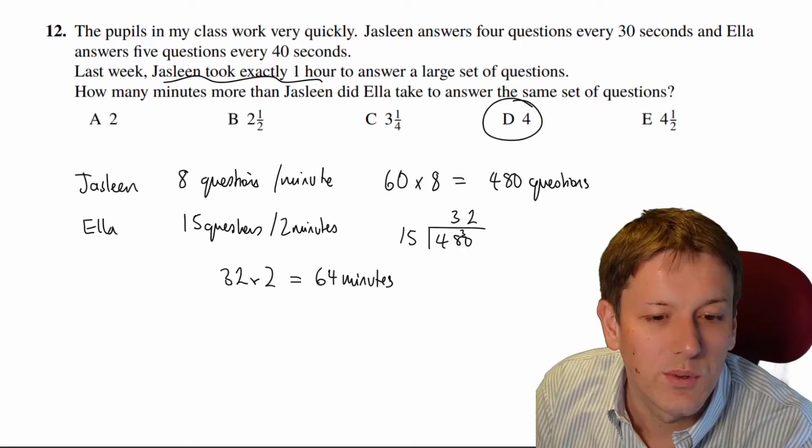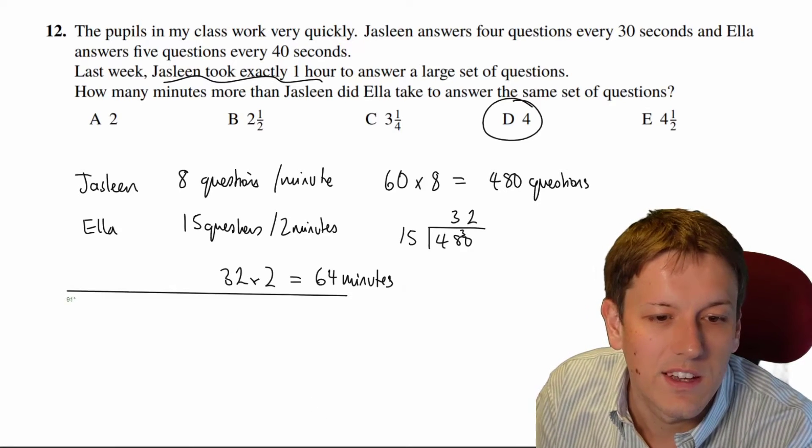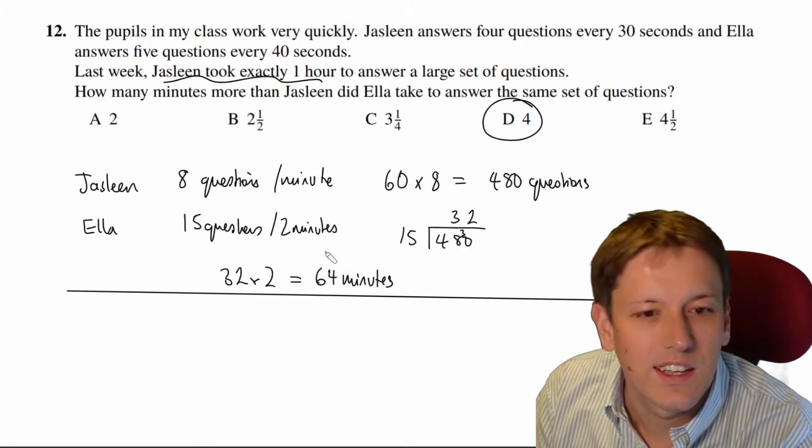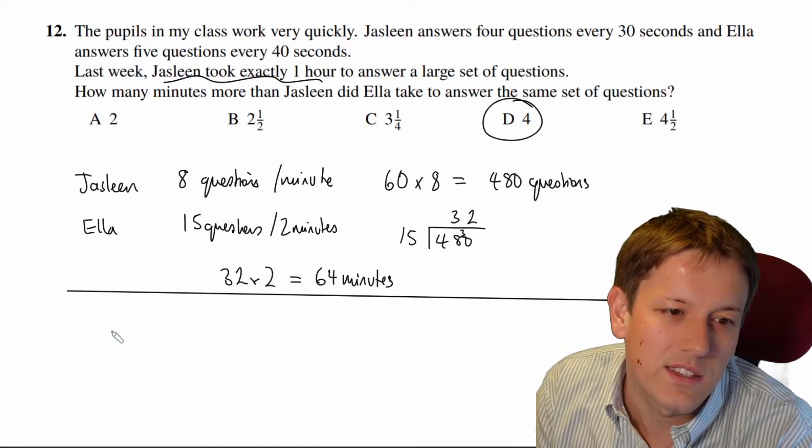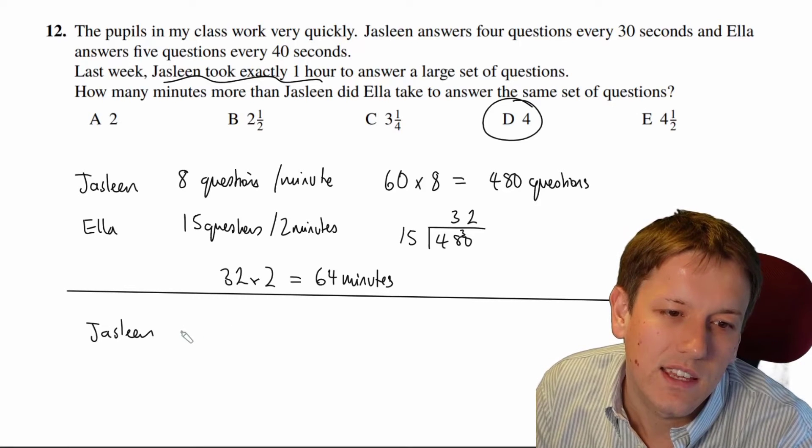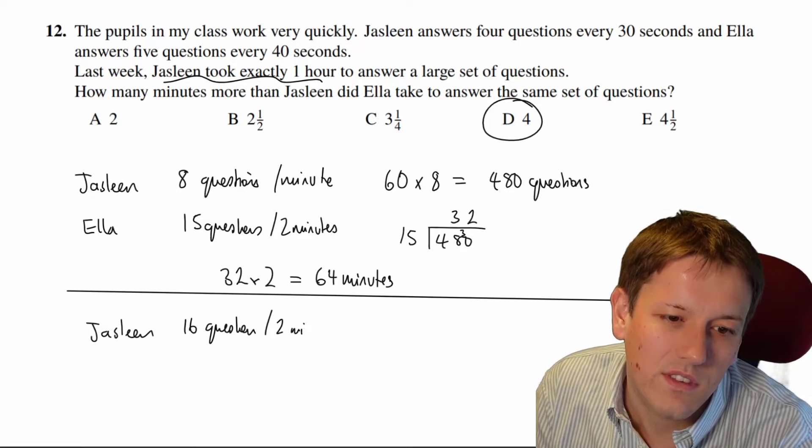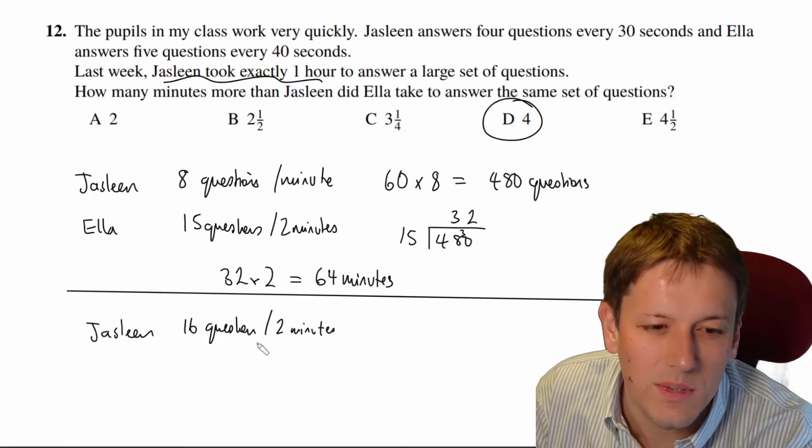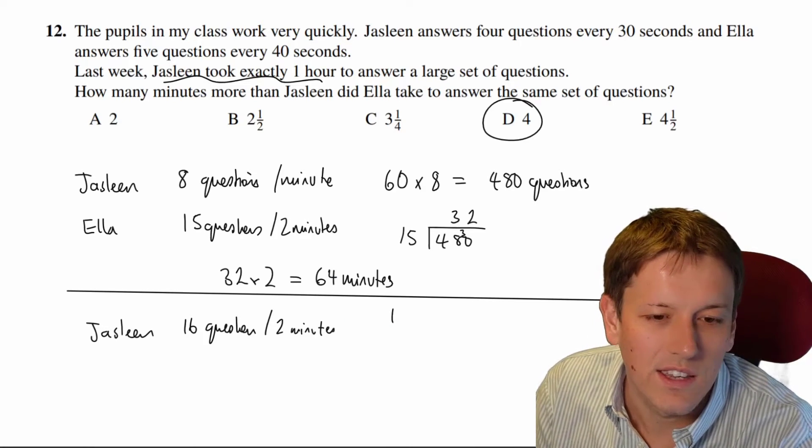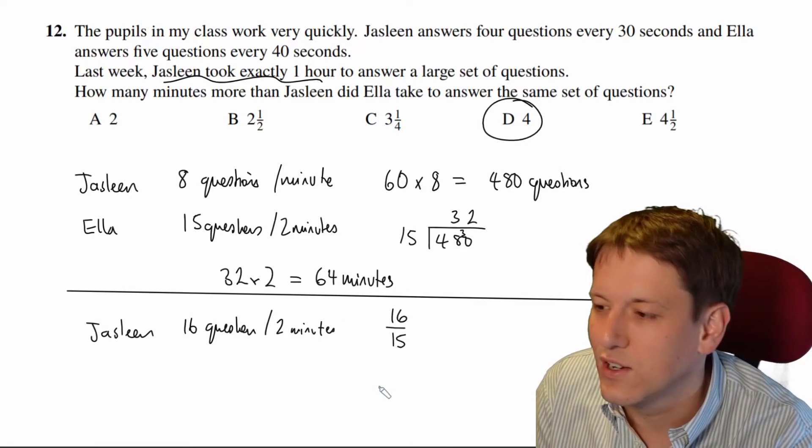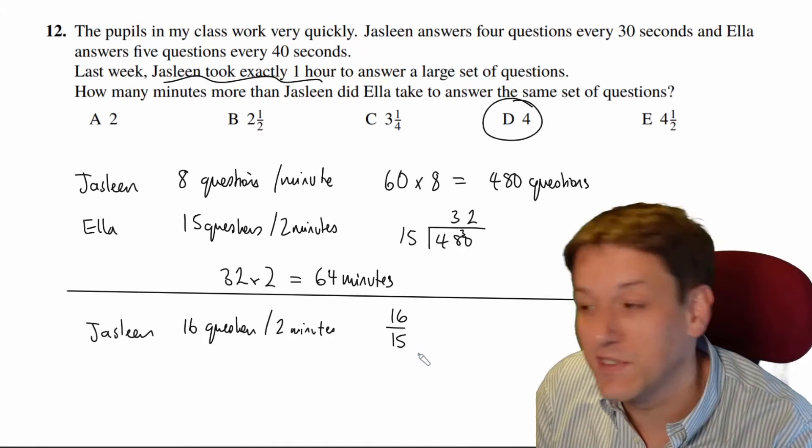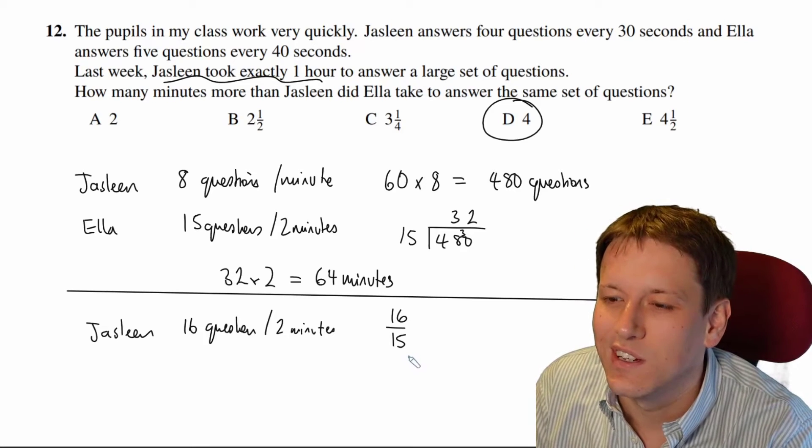A fast way of doing this if you want a really nice mathematical method is actually to look at how long they each take, well how many questions they each do in two minutes. So you see you could also say that Jasleen does 16 questions in two minutes whereas Ella does only 15 questions in two minutes. So Jasleen's speed if you like is 16/15 of the speed of Ella, so Ella's speed is 15/16 of the speed of Jasleen.